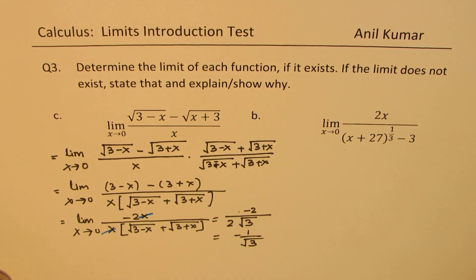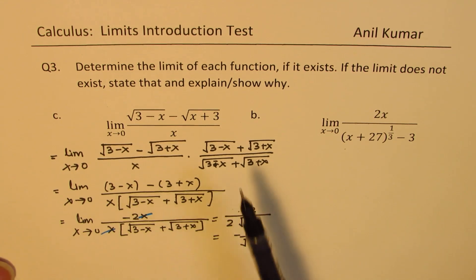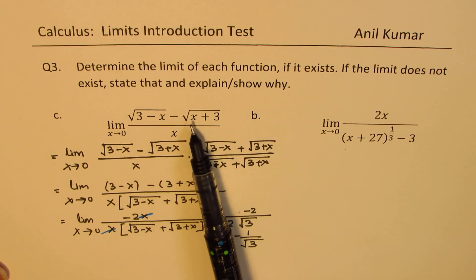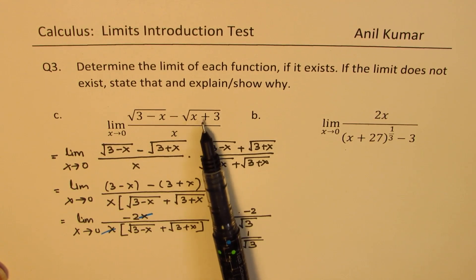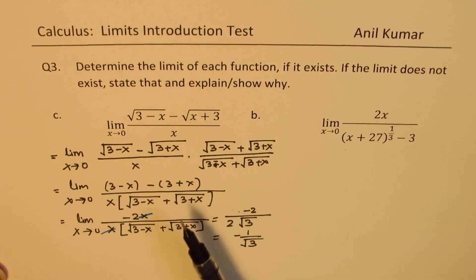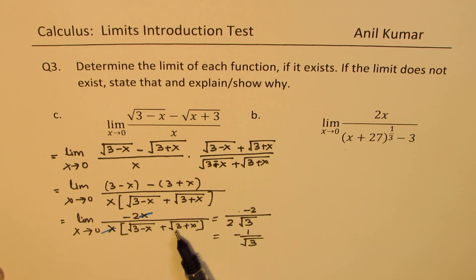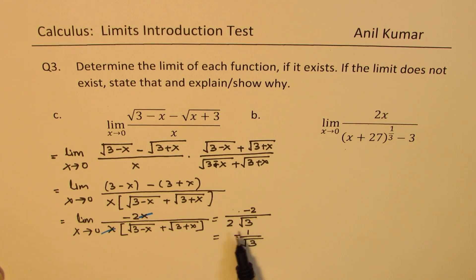So the result of the given question is minus 1 over square root of 3. You need to rationalize, and it is a good idea to write x plus 3 as 3 plus x to avoid confusion. After cancellation and substituting x equals 0, we get square root of 3 plus square root of 3, written as 2 times square root of 3. Cancelling the 2s, we are left with minus 1 over square root of 3.